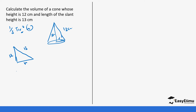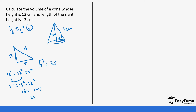We have the height of 12 and the slant height of 13, and we are looking for r. Using Pythagoras: 13² = 12² + r², which rearranges to r² = 13² − 12² = 169 − 144 = 25. Taking the square root of both sides gives r = 5 cm.